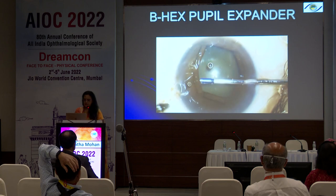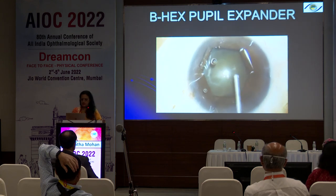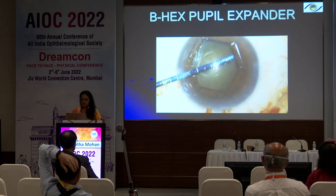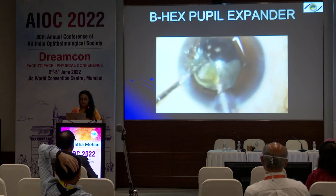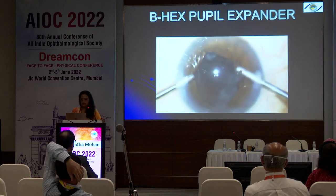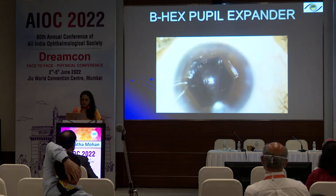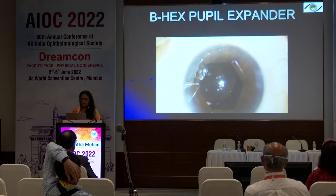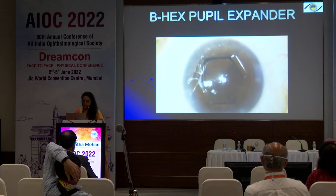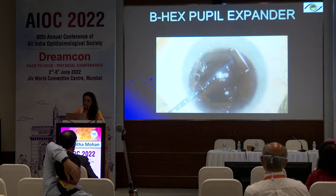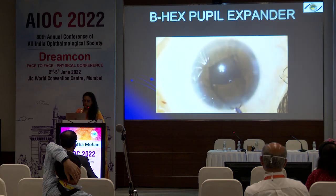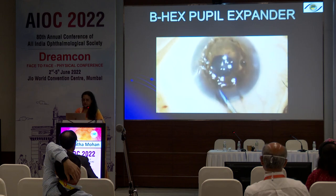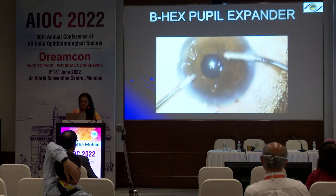You get a hexagonal pupil of approximately 6 to 6.5 millimeters, which is good enough to proceed with cataract surgery without the pupil coming into the FACO port. Once the procedure is done, you can disengage this pupil expander and it can be removed very easily either through the side port or through the main port. You can see how nicely the pupil returns to a round shape. It is very atraumatic because it is extremely thin and user-friendly.